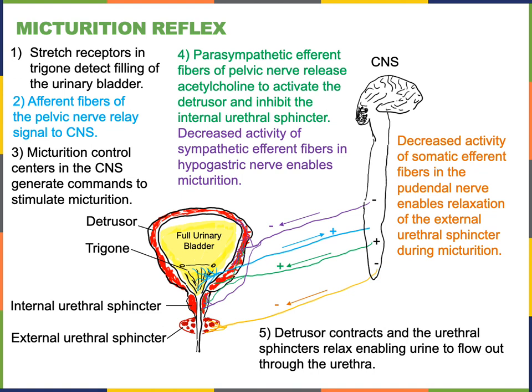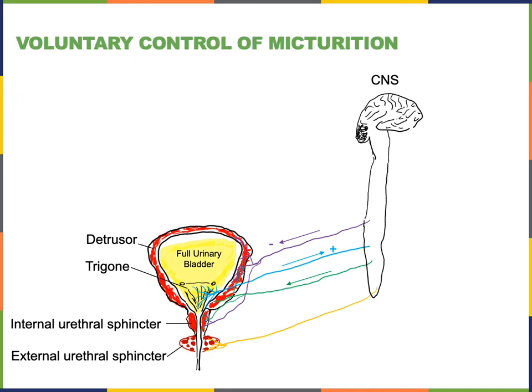As the detrusor contracts and both urethral sphincters relax, urine is able to flow out through the urethra in the process of micturition. The micturition reflex enables an involuntary mechanism to stimulate micturition, and it is the primary mechanism driving micturition in infants.